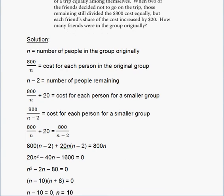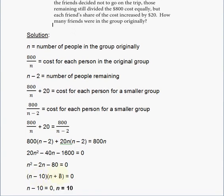When two factors multiply to produce 0, one of the factors must equal 0. So either N minus 10 equals 0, or N plus 8 equals 0. Only N minus 10 equals 0 gives a positive value: adding 10 to both sides gives N equals 10. So 10 friends were in the group originally. You cannot have a negative number of friends, so you choose the positive result: N equals 10.